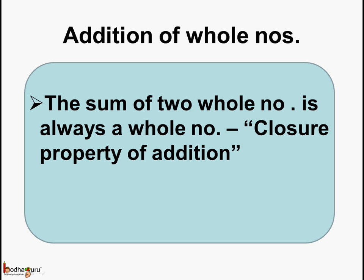Now you know two properties related to the addition of whole numbers. First, we saw the sum of two whole numbers is always a whole number. And this is called the closure property of addition. For example, if we add two whole numbers like 3 and 4, the sum is 7, which is again a whole number.